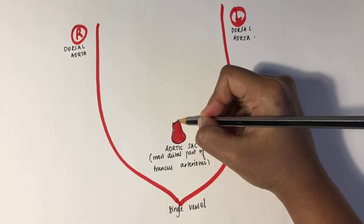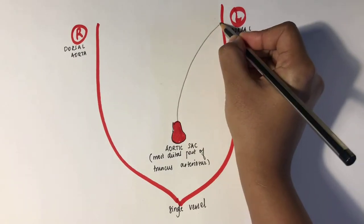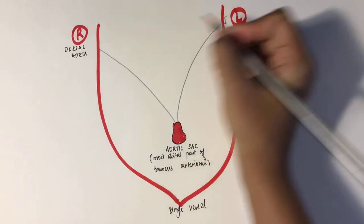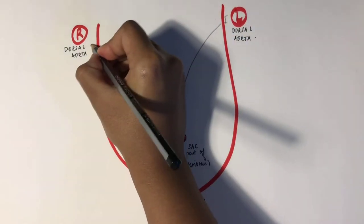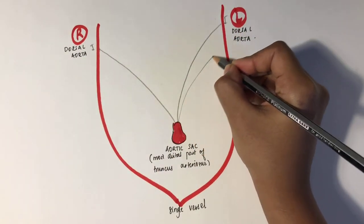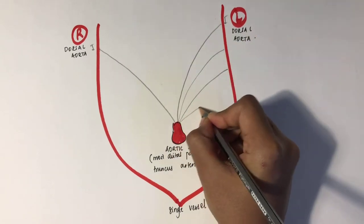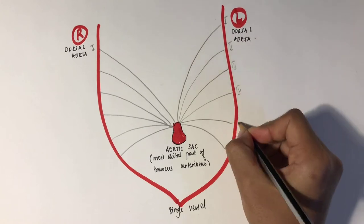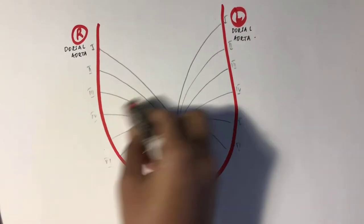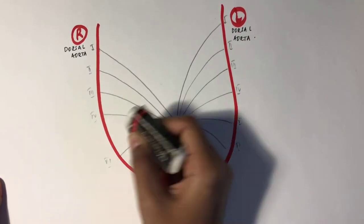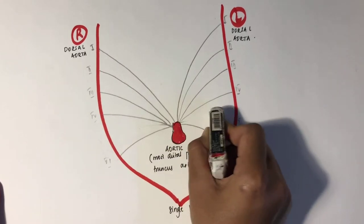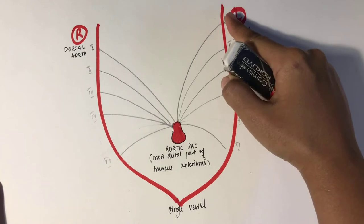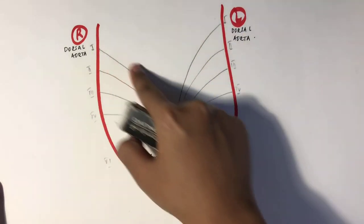The first pair of aortic arches arises from the ventral aorta, followed by the second, third, fourth, fifth, and sixth pairs. The fifth arch never forms, or sometimes forms incompletely and then regresses.